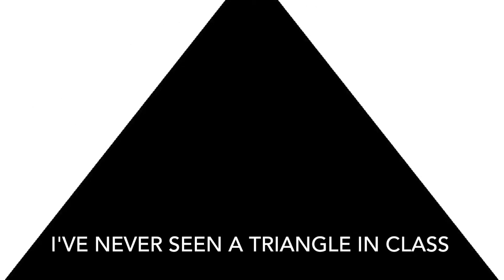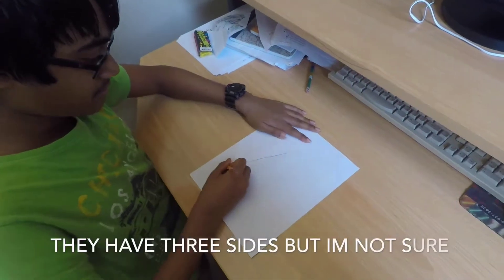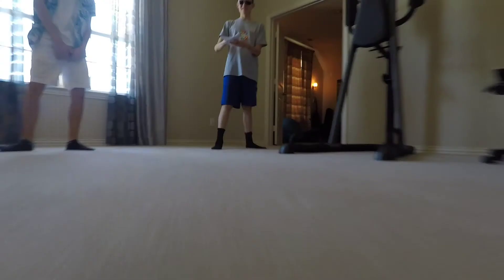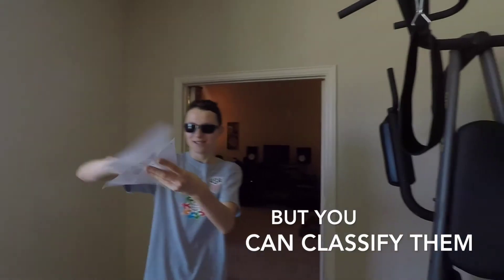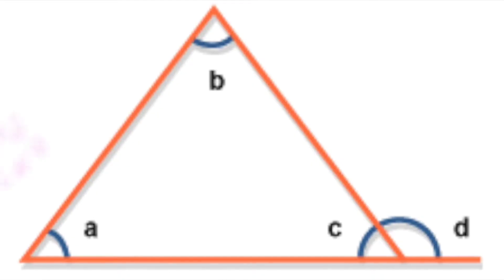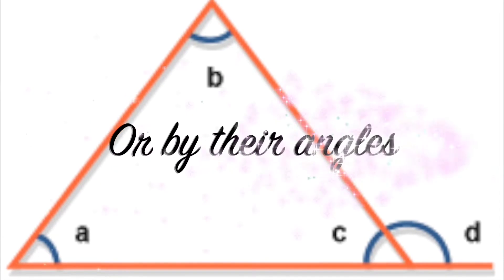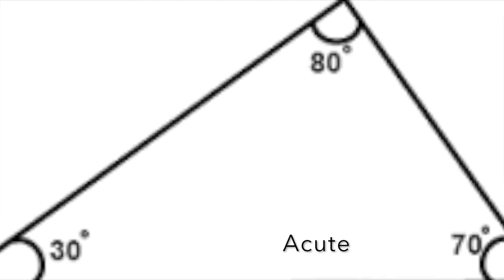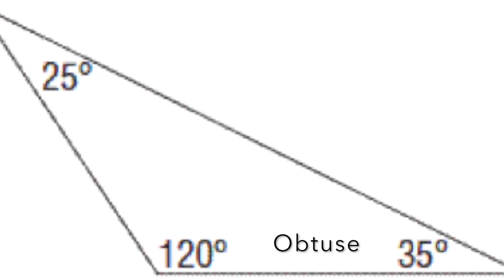I've never seen a triangle in class — they have three sides, but I'm not sure about the rest. But you can classify them by their sides or by their angles. They can be isosceles, scalene, equilateral, maybe an acute, obtuse, or right triangle — but we don't care.